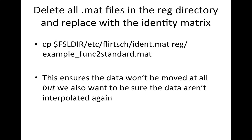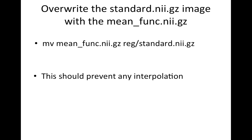This ensures the data won't be moved at all, since we've replaced the .mat file with the identity. But we still need to make sure our data do not get interpolated again — after the movement (which is no movement in this case), the voxels need to line up exactly. To fix that, copy — not move — the mean_func, because the mean_func is just the average of the data you fed in. All you care about is that the voxels are set up properly: the right voxel dimensions and the right number of voxels in each X, Y, and Z dimension. Copy it: 'cp mean_func.nii.gz reg/standard.nii.gz' — overwrite the standard image but don't lose the original mean_func.